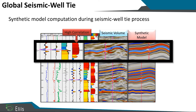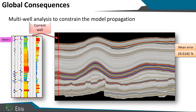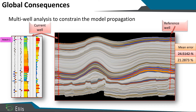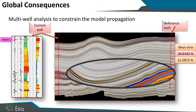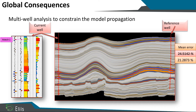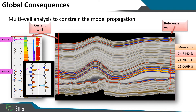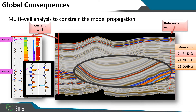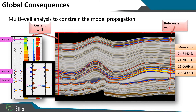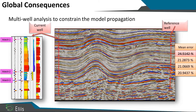We can then have some global consequences. For example, I can propagate my synthetic along an arbitrary line, use a reference well to compare with the seismic, and I can observe some discontinuity. If I fit my synthetic with my seismic with some stretch and squeeze or some time shift, then I will have a better comparison between my seismic and my synthetic, and have a better propagation. In this case, I don't have any discontinuity — I have continuity on my reflector. I can increase with more stretch and squeeze the comparison between my seismic and my synthetic to minimize the error.